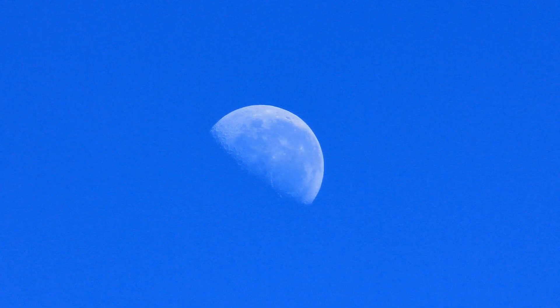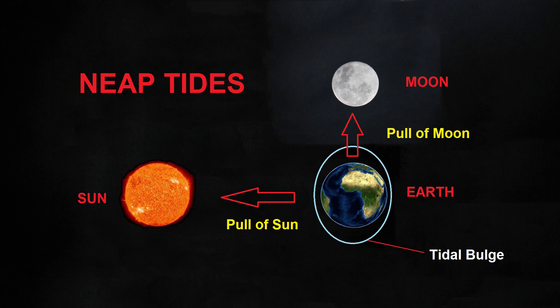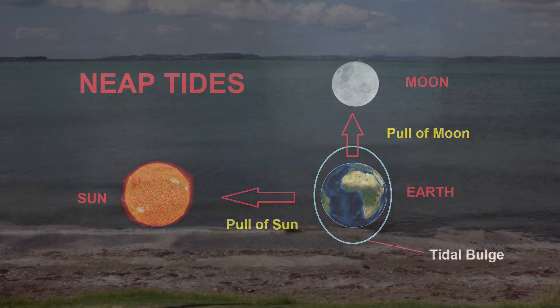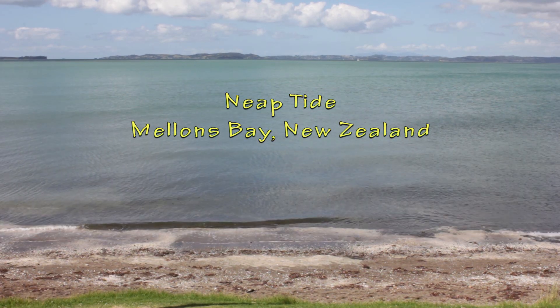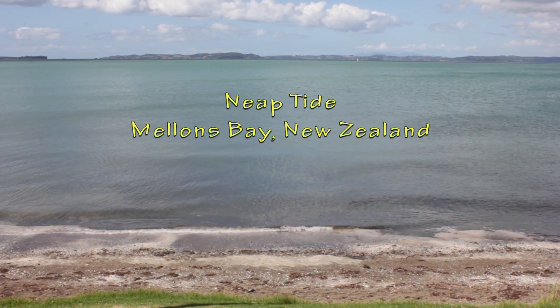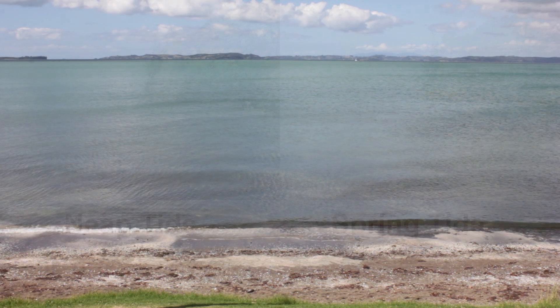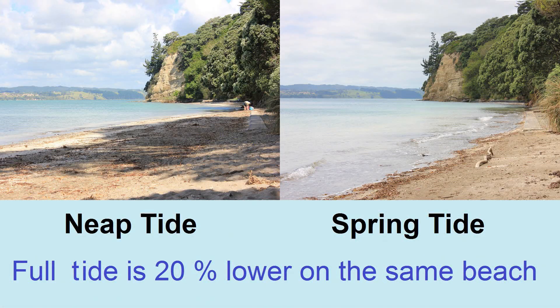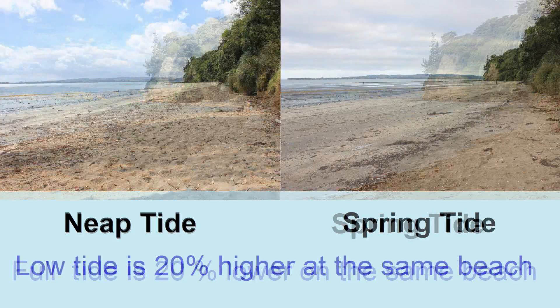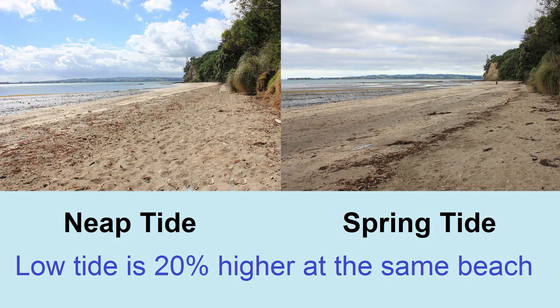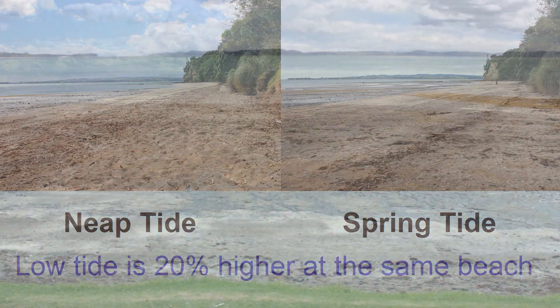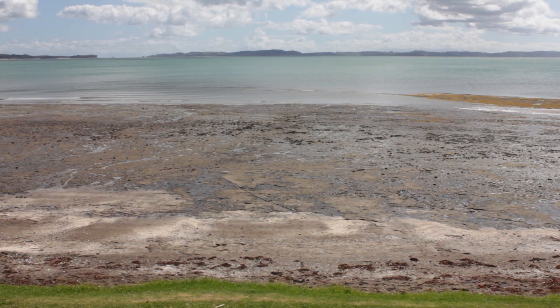During the Moon's quarter phases, the line from the Earth to the Moon is at right angles to the line from the Earth to the Sun, as shown in the diagram. Consequently, the tide generating forces of the Sun and Moon oppose each other, thereby producing tidal ranges that are approximately 20% lower than the mean tidal range. We call these neap tides.